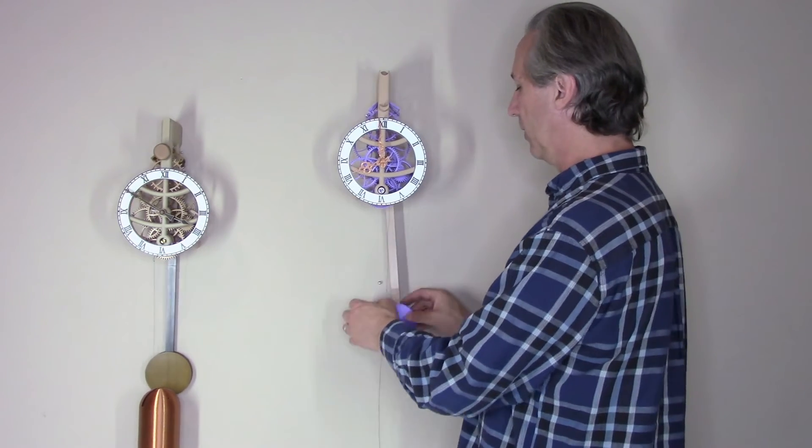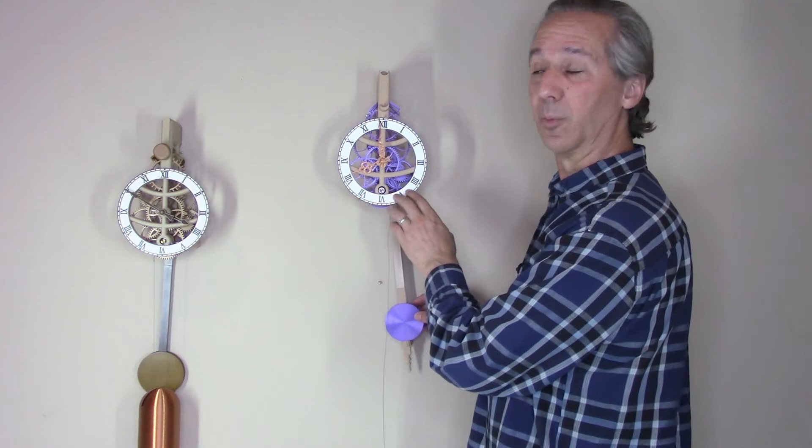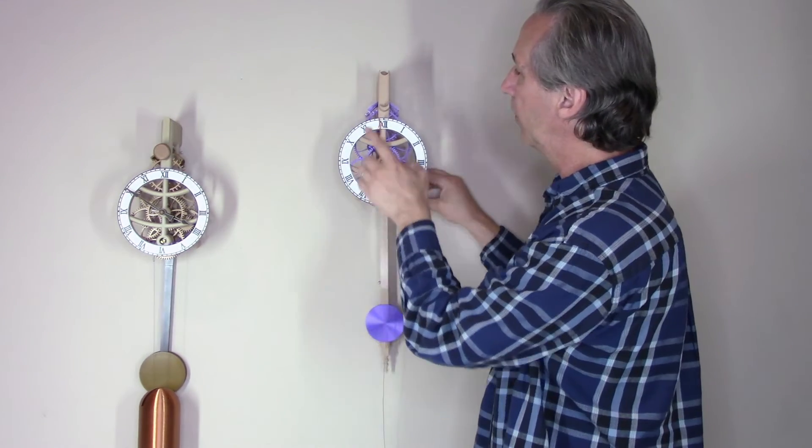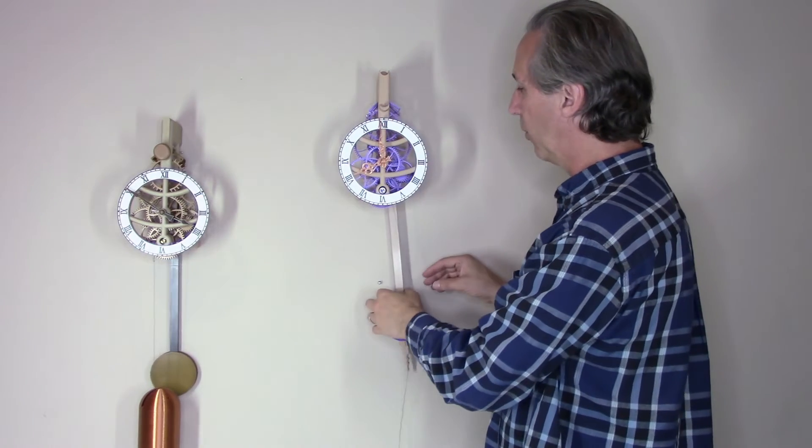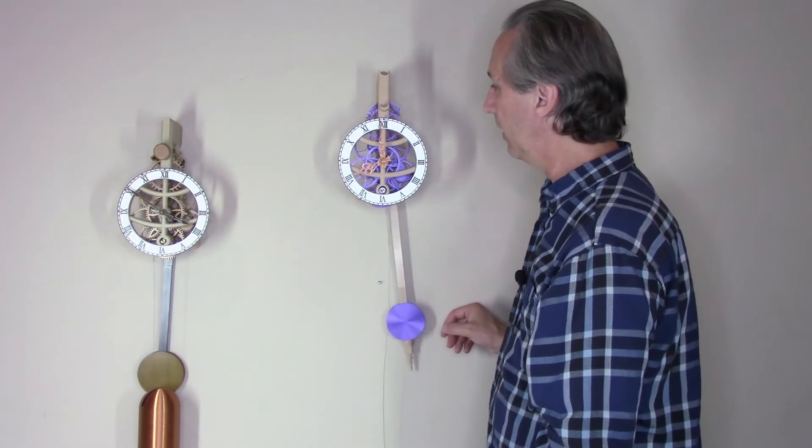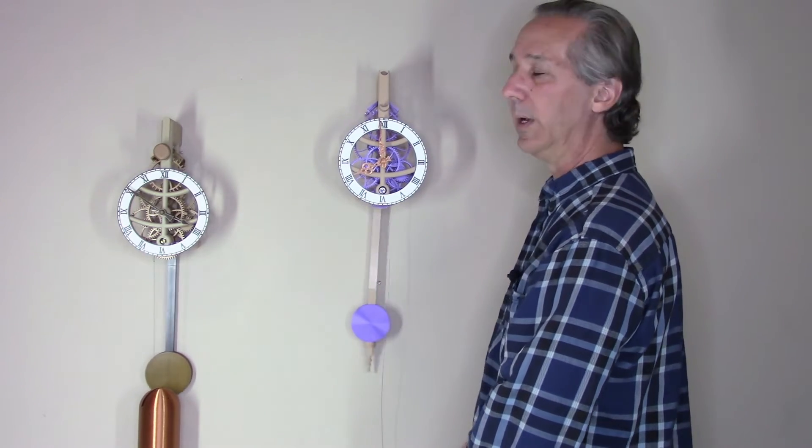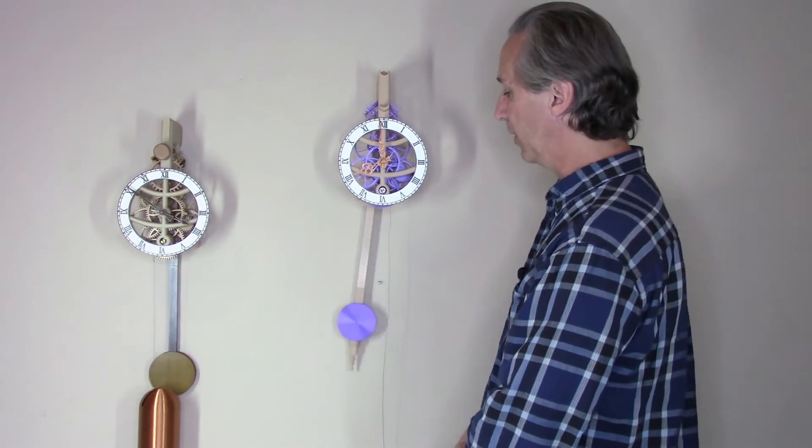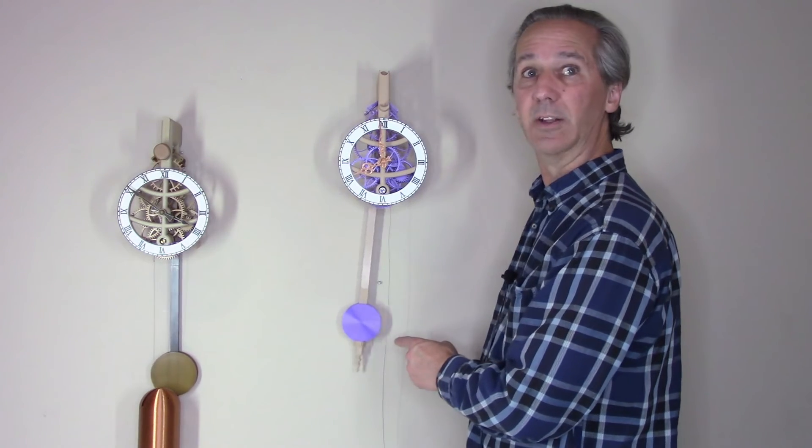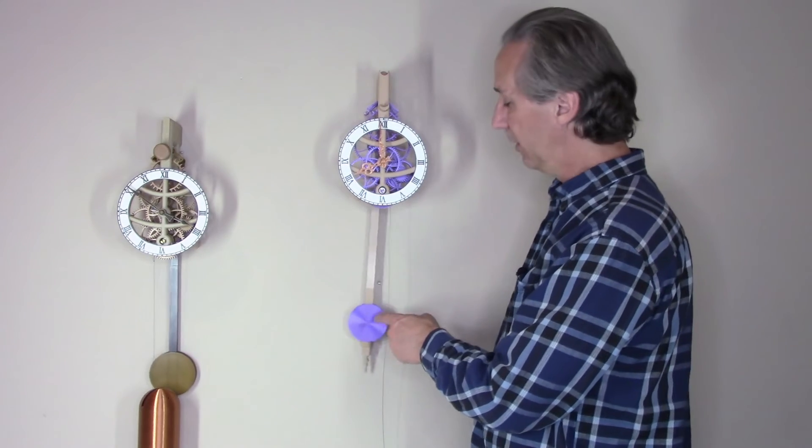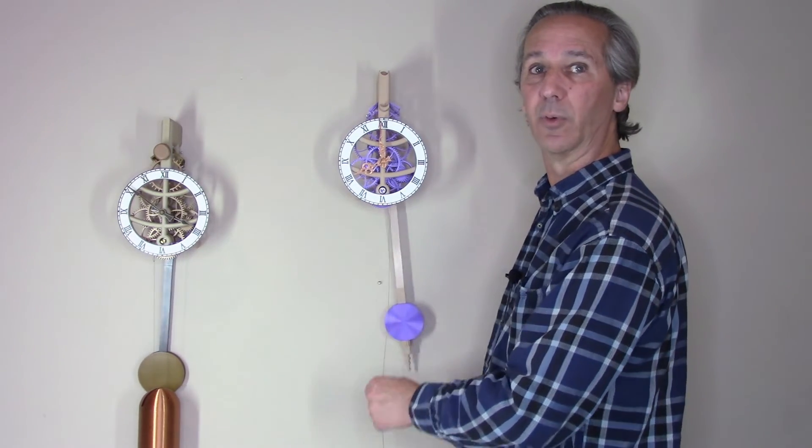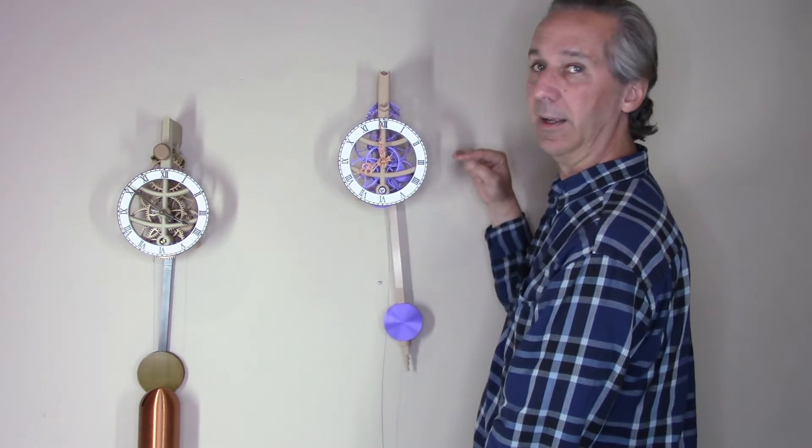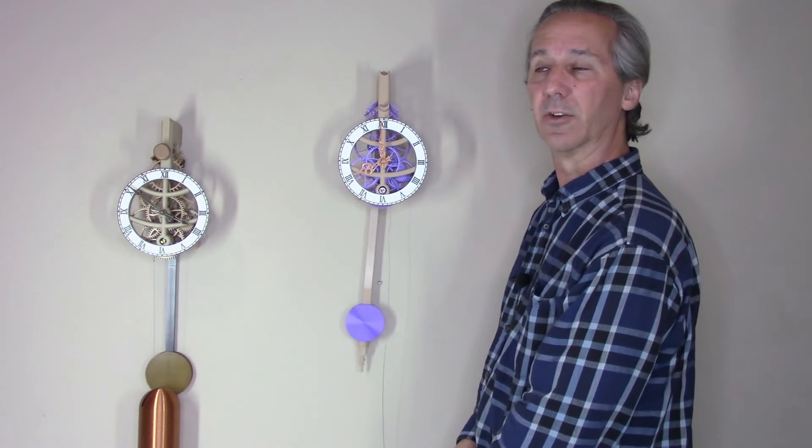It would be a great idea right now to test the bearings supporting the pendulum to make sure that they are low friction and able to run this clock properly. Start with the frame level against the wall, bring the pendulum arm to one side and release it. The pendulum should swing and it should take several minutes before you see the amplitude degrading to a negligible amplitude. It should be a minimum of at least five minutes of free swing, ideally 10 or maybe even 20 minutes of free swing time. That's telling you that the pendulum support bearings are low friction and that will enable this clock to run for a very long time.